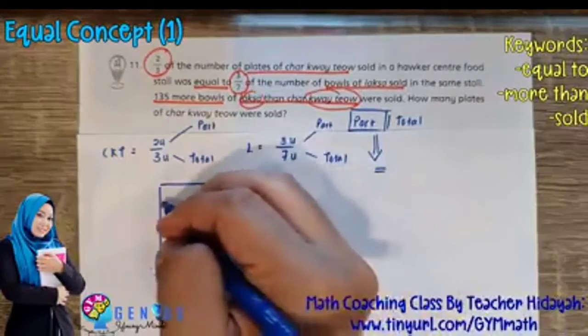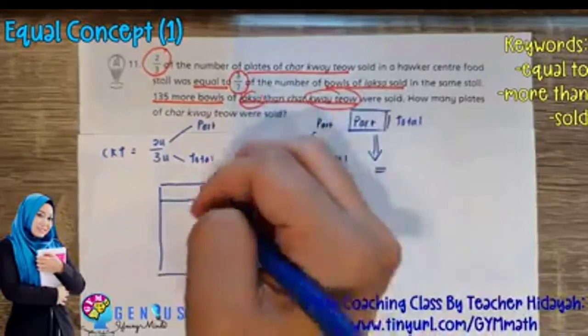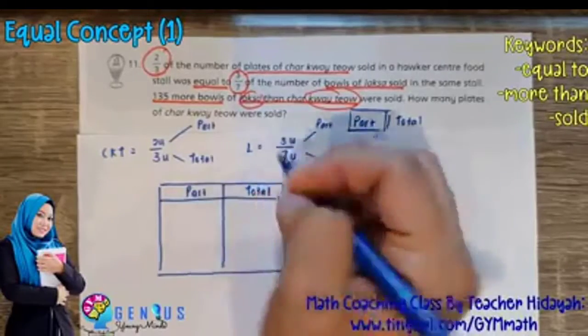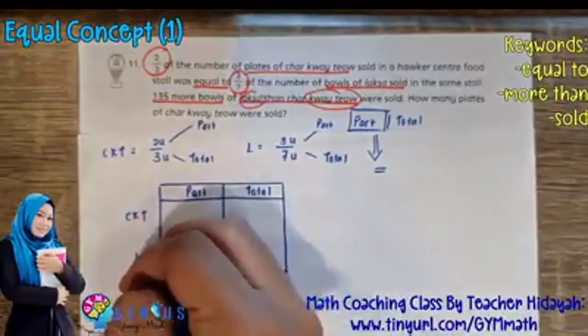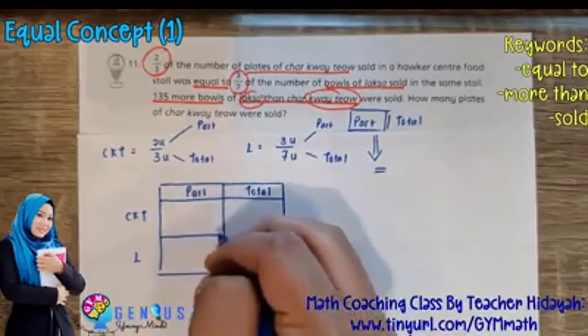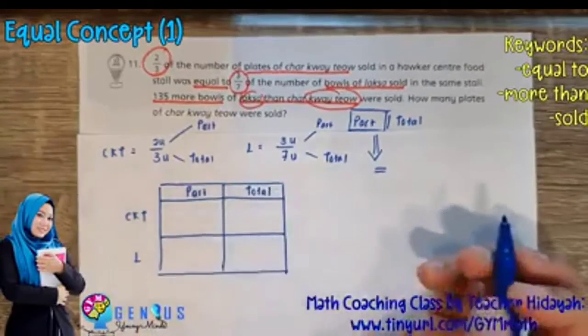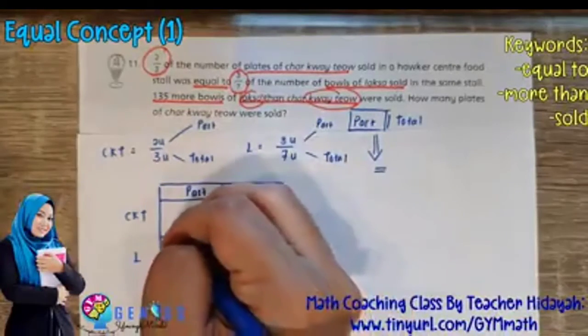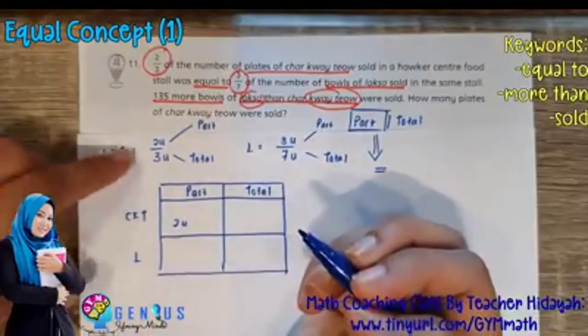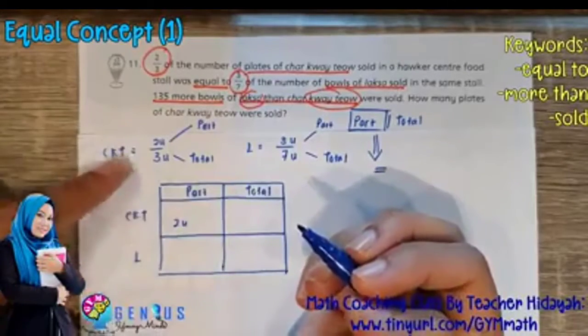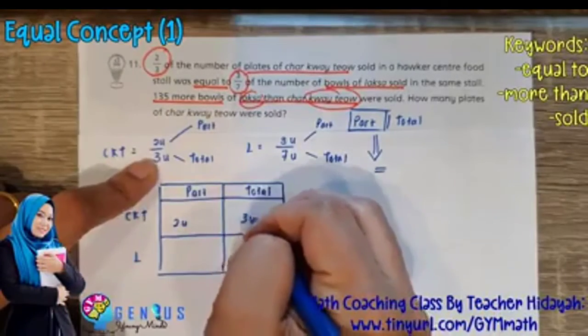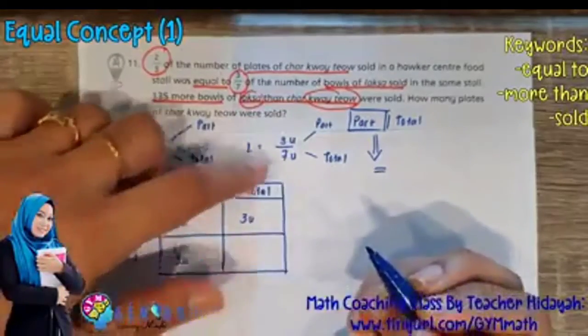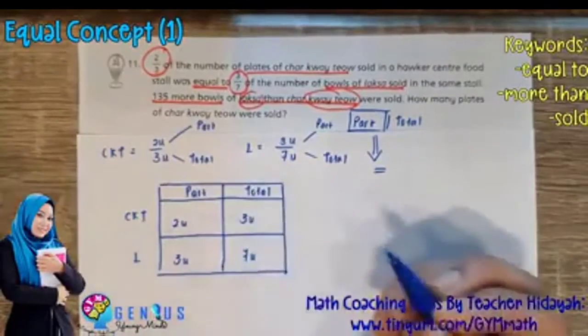Okay, we are going to cut the table into 2 parts. So we have the part and we have the total. Then we have the Cha Kuei Tiao and then we have the Laksa. Then you cut it into 2 separate rows. Now, Cha Kuei Tiao parts. How many parts are there? There are 2. So the total for Cha Kuei Tiao, we look here, there are 3 units. Now Laksa part is 3 units. Laksa total is 7 units.